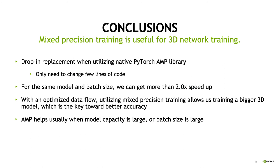Now we summarize our study. The main takeaway is that mixed precision training is useful for 3D network training. AMP is easy — it is a drop-in replacement when utilizing the native PyTorch AMP library, requiring only a few lines of code changes. For the same model and batch size, we can get more than 2x speedup. With an optimized data flow, utilizing mixed precision training allows us to train larger 3D models, which is key towards better accuracy. AMP helps most when model capacity is large, batch size is large, or in our case, patch size is large as well.